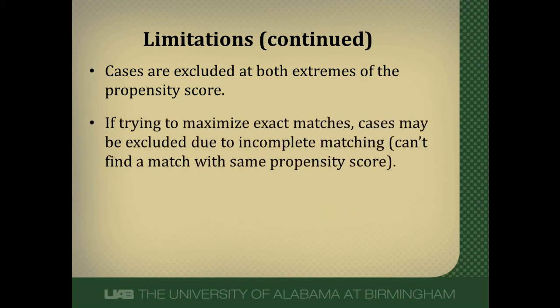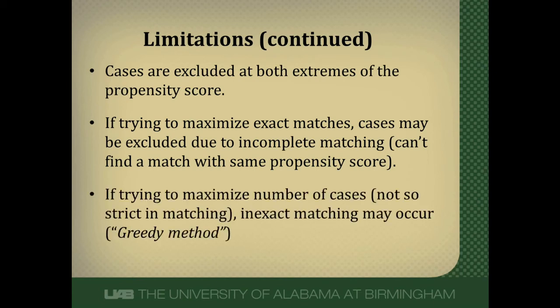If we're trying to have an exact match, we may not find one, so we may lose some people. Sometimes the greedy method is mentioned — here they don't find an exact match but try to find somebody close to the propensity score of the person on treatment. It doesn't have to be perfect; it's the next nearest person, and it tries to include as many people as possible. The tradeoff of the greedy method is that it may not be as perfectly balanced as trying to maximize matches, but you lose fewer people this way.